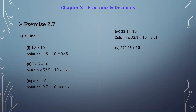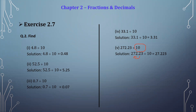The fifth example is 272.23 divided by 10. We follow the same steps: shift the decimal point to the left by one digit only, because 10 has only one zero. The decimal point moves to after 27, giving us the final answer 27.223. In this way, we can solve examples where we are dividing by 10.